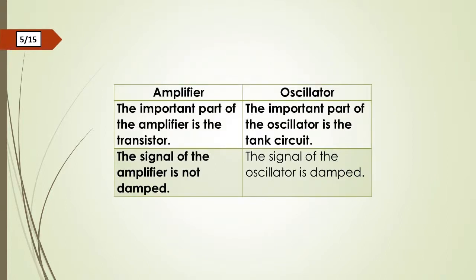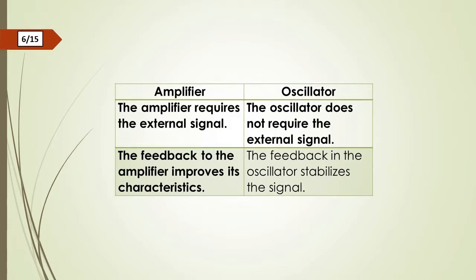The important part of the amplifier is the transistor. The important part of the oscillator is the tank circuit. The signal of the amplifier is not damped. The signal of the oscillator is damped. The amplifier requires the external signal. The oscillator does not require the external signal.